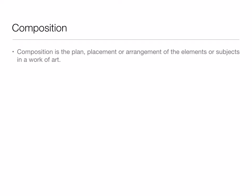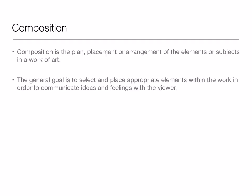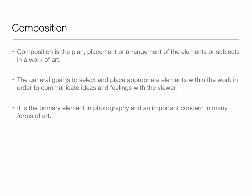Composition is the plan, placement, or arrangement of the elements or subjects in a work of art. The general goal is to select and place appropriate elements within the work in order to communicate ideas and feelings with the viewer. It is the primary element in photography and an important concern in many forms of art, like film. This isn't something completely new — we've talked about composition before.